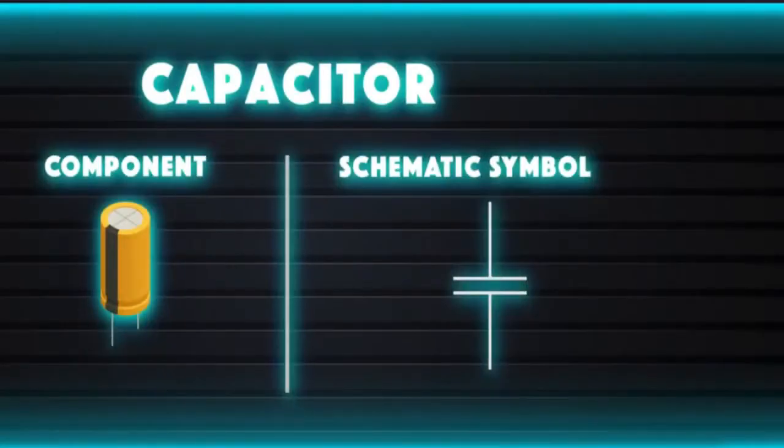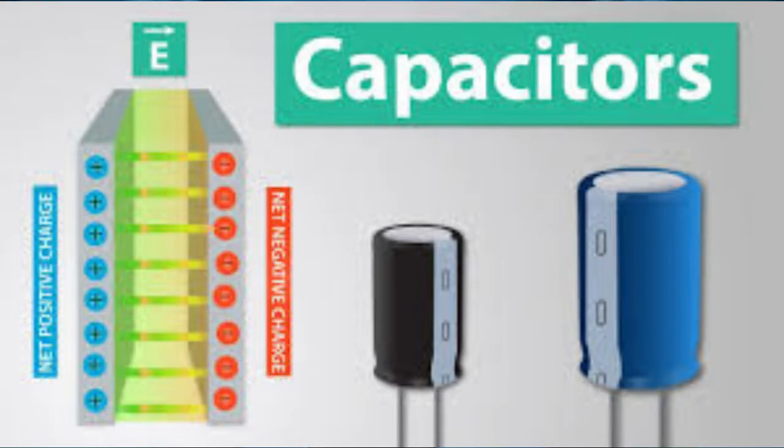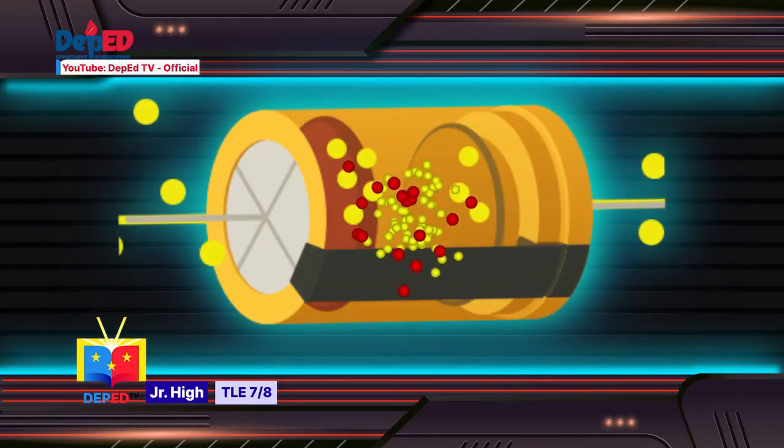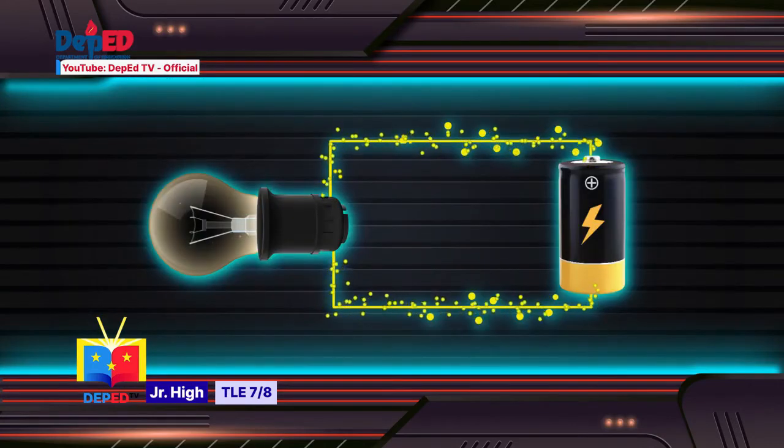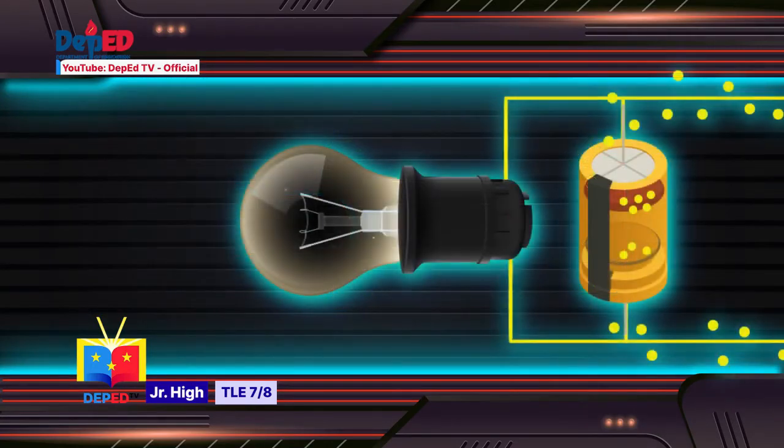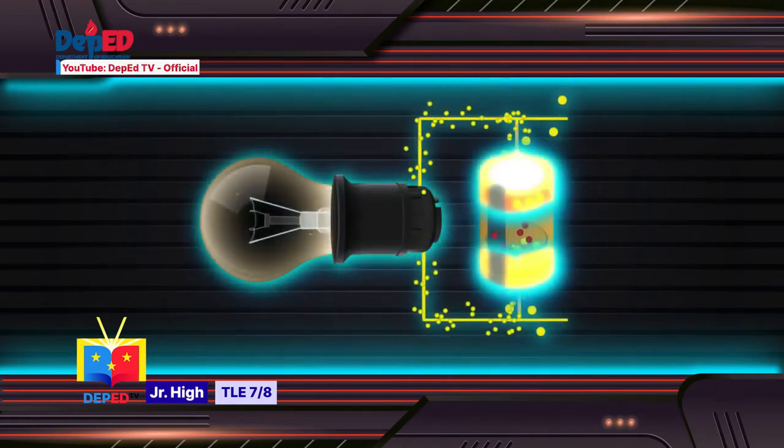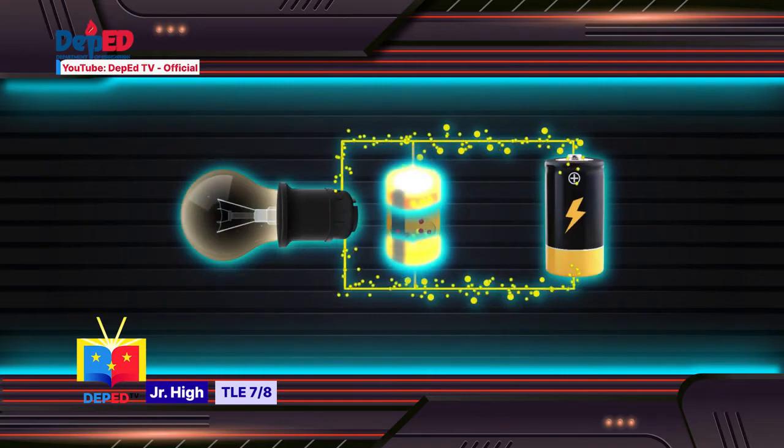A capacitor can store electric energy when it is connected to its charging circuit. However, that stored energy can dissipate when it is disconnected from its charging circuit, so it can only be used like a temporary battery. Capacitors are commonly used in electronic devices to maintain the power supply while the batteries are being changed. Capacitance is the ability of the capacitor to store an electric charge and the unit of capacitance is called the Farad.